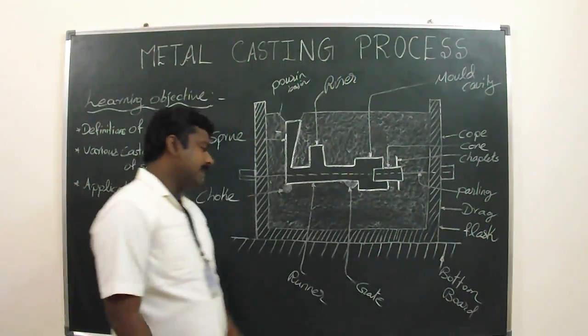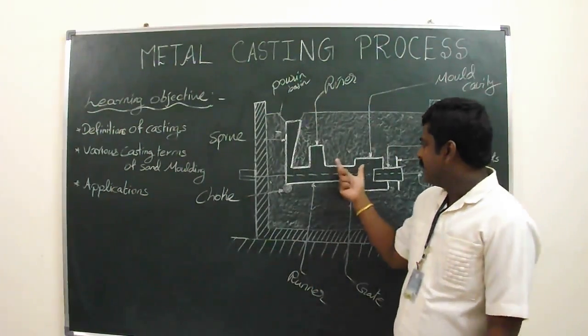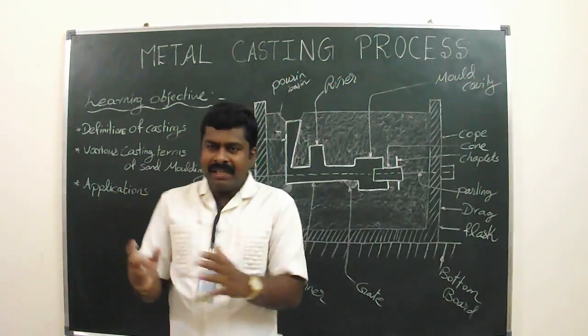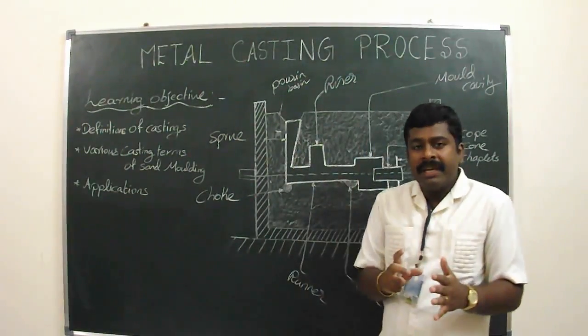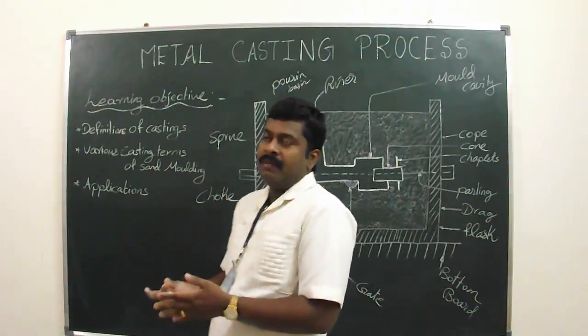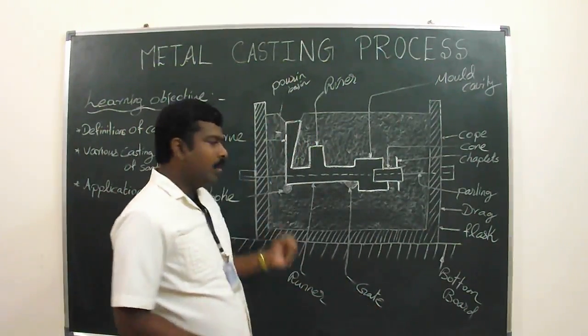Next one is the riser. Riser is the reservoir of the molten metal provided in the casting. It is used so that the hot molten metal can back-flow into the mold cavity when there is reduction in the volume of metal due to its solidification.